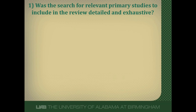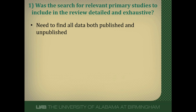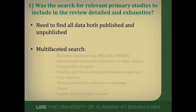The first question is: was the search for relevant primary studies detailed and exhaustive? The whole point of a systematic review is to understand the totality of the evidence on a given topic. To do that, the authors need to find the totality of the evidence, which can be both published and unpublished. Finding published information is relatively easy; the key is finding the unpublished information. So the authors need to do a very multifaceted search and look in a lot of places.